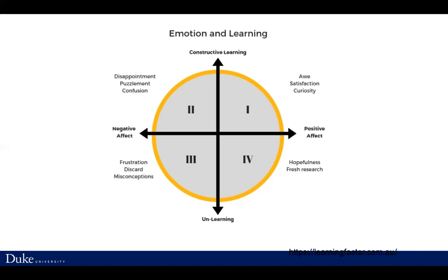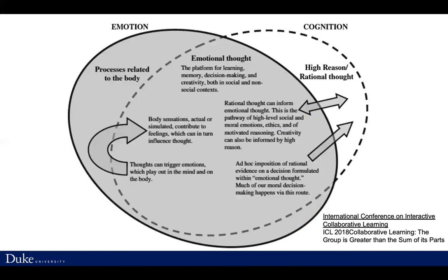But we don't want students to go from disappointment to frustration. Sometimes that is a part of the cycle they need to go through in order to discard misconceptions, to unlearn certain things so they can develop new gaps in their knowledge and be hopeful about learning. I will post all the references for these diagrams. Emotional learning has been very well studied for decades. I wanted to tap into that emotional learning by using art. Here is another diagram of emotion and cognition, where emotional thought is the platform for learning, memory, decision-making, and creativity, both in social and non-social contexts.